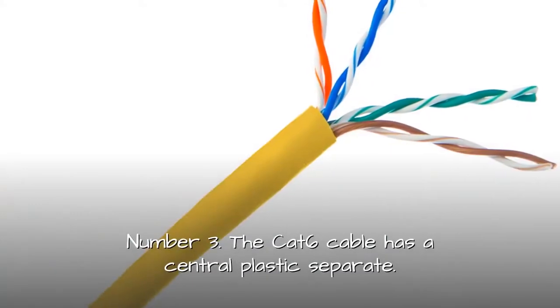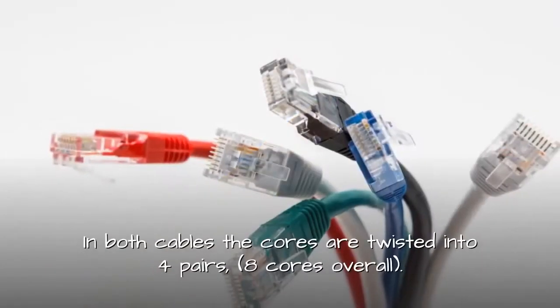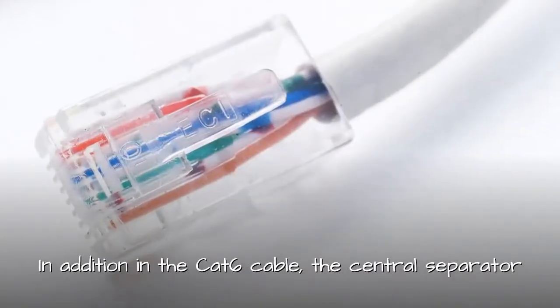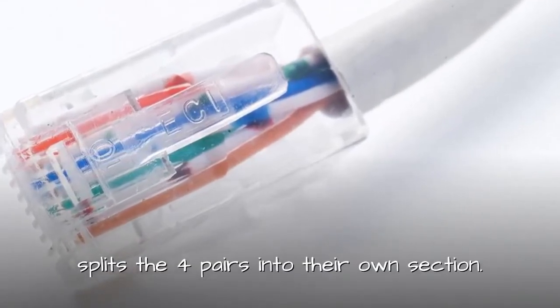Number 3: The CAT6 cable has a central plastic separator. In both cables, the cores are twisted into 4 pairs, 8 cores overall. In addition, in the CAT6 cable, the central separator splits the 4 pairs into their own section.